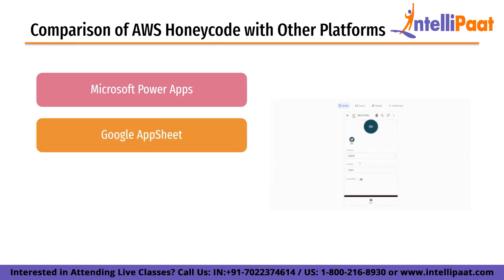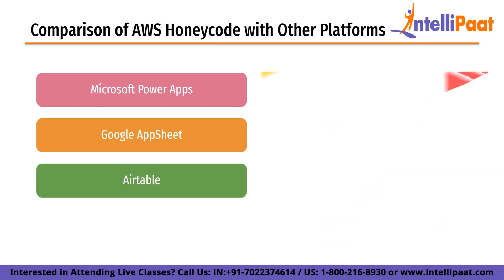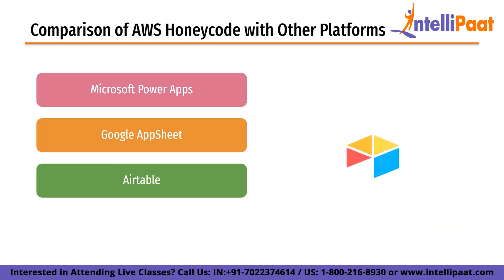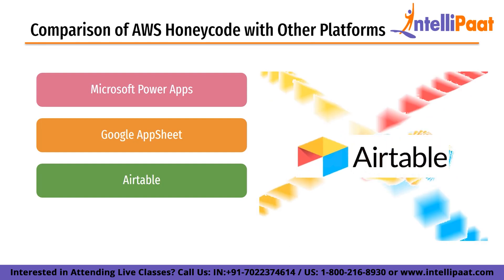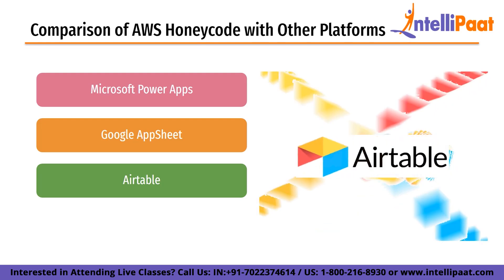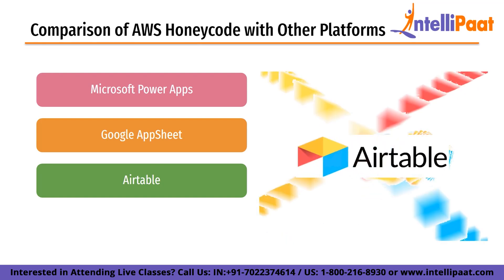Next is Google AppSheet, another popular app development platform that provides similar functionality to Honeycode. AppSheet offers a range of templates and integrations with other Google services such as Sheets, Drive and Maps. AppSheet also provides advanced features such as AI and machine learning capabilities that help automate tasks and improve app performance. Like PowerApps, AppSheet can be more complex to use than Honeycode and may require more technical expertise. Next on our list is Airtable — a popular cloud-based database and app development platform. Airtable offers templates, integrations with services such as Slack and Trello, and advanced automation and scripting capabilities. While Airtable is more powerful than Honeycode, it can be more complex to use.